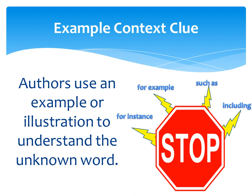An example context clue occurs when authors use an example or illustration to understand the unknown word. The following signal words indicate that an example is coming: for instance, for example, such as, and including. A reader should pay attention to these words as a clue that an example is forthcoming.